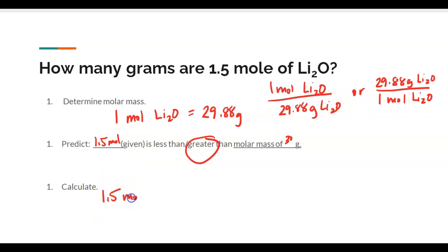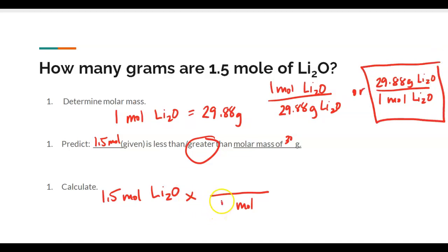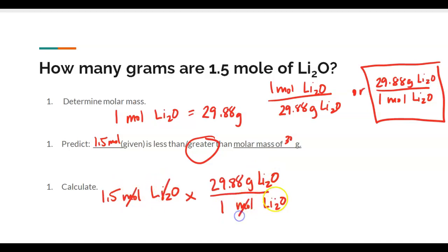I write down the given: 1.5 moles of Li₂O, then a time sign. Because I have moles in the numerator, I need moles in the denominator. I choose the conversion factor with moles on the bottom: 29.88 grams of Li₂O over one mol of Li₂O. The moles cancel, and my answer is 44.82 grams of Li₂O — a number larger than 30, as expected.